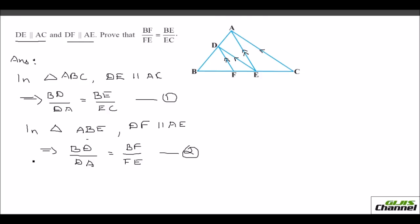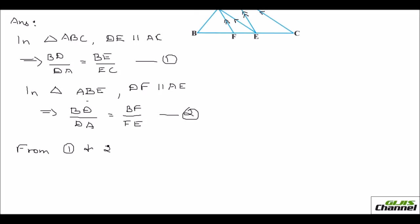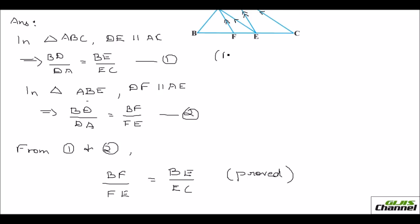From equations 1 and 2, BD over DA equals both BE over EC and BF over FE. Therefore BF over FE equals BE over EC, which is what we were asked to prove. The reason in both steps is BPT. Hence proved.